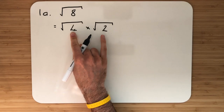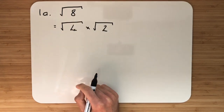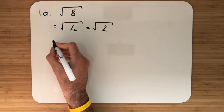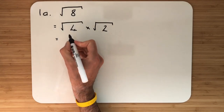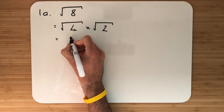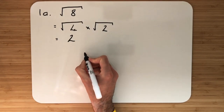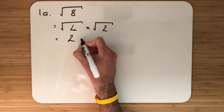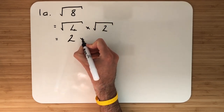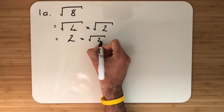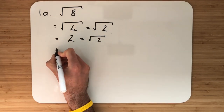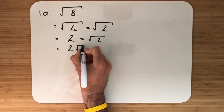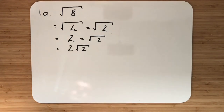Remember, 4 and 2 gives me 8. From there we want to simplify down. I know that the square root of 4 is 2. I cannot simplify root 2 down, so I'll leave that as multiplied by root 2. So the final answer is 2 root 2.